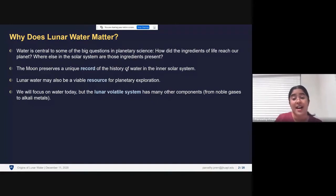I am going to be talking mostly about water today, but water is only one of several volatile species that are part of the lunar volatile system. That volatile system has many other components, from noble gases like helium and argon to alkali metals like sodium and potassium. Rosemary Killen spoke to you about sodium a few talks ago. Every single one of those volatiles has its own interesting story to tell.